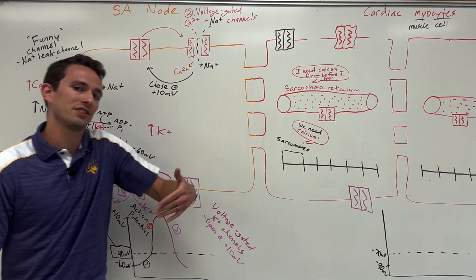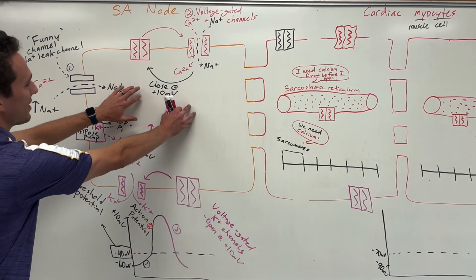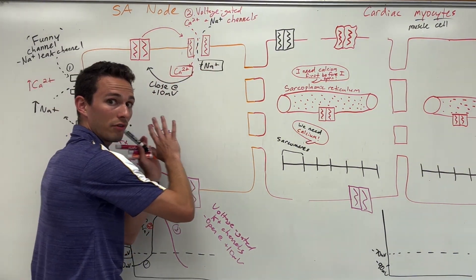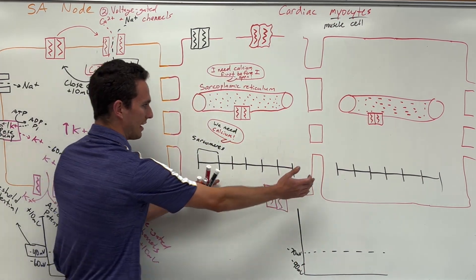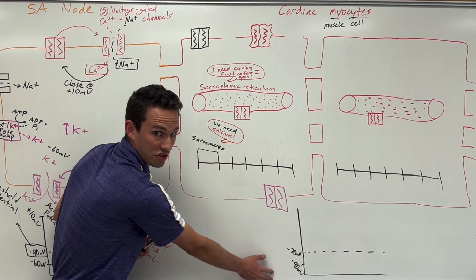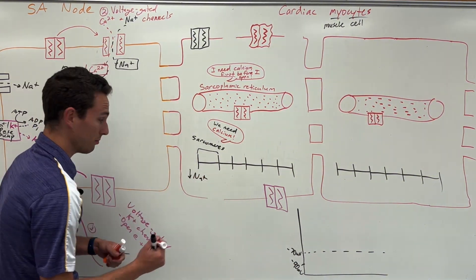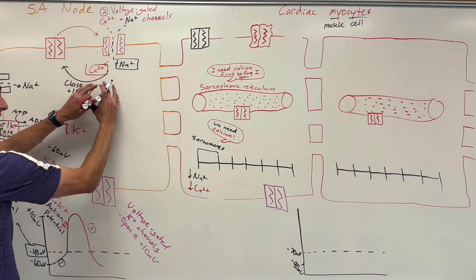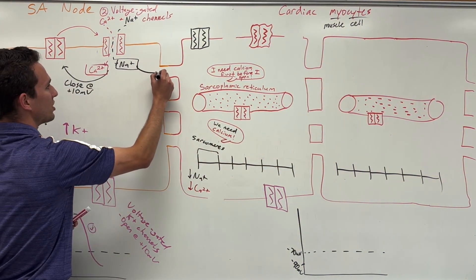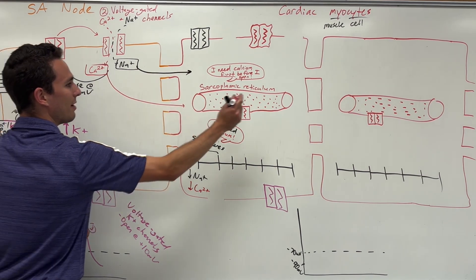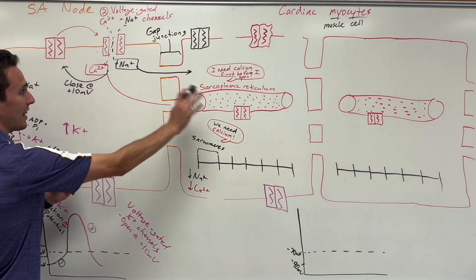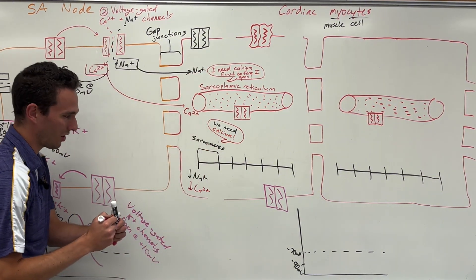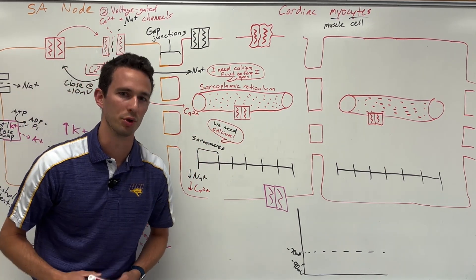That is how the SA node spontaneously depolarizes and sends its own action potential. But remember, the goal is to contract the cardiac myocytes. So we need to follow calcium and sodium ions as they travel through. These cardiac myocytes are also cells, also negatively charged, resting at negative 90 millivolts, with very low amounts of sodium and calcium — just like the SA node. So these ions, flowing in from high to low, travel through specialized channels called gap junctions into the neighboring cardiac myocyte. When the gap junctions allow those ions through, now we've got sodium and calcium coming in.